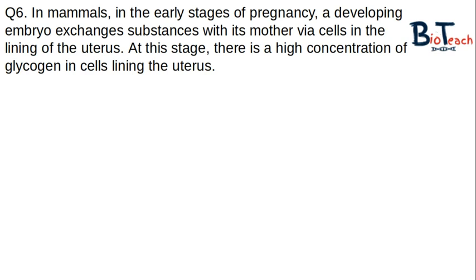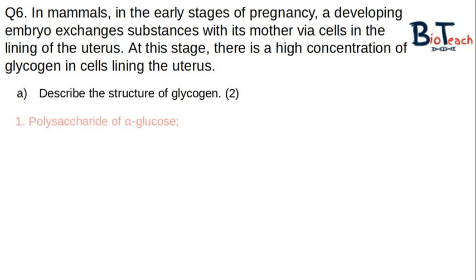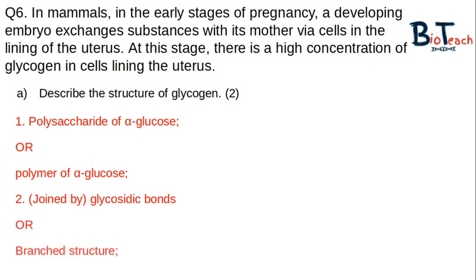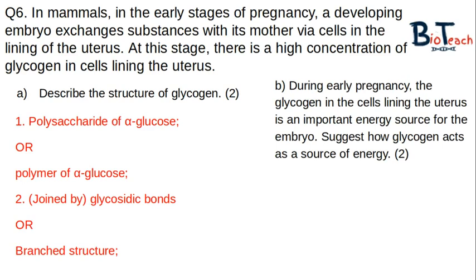The last question is on glycogen. There are a lot of questions on starch and cellulose, so this one will be really useful to know. The question gives a blurb about glycogen in mammals and the uterus during pregnancy. The first part asks us to describe the structure of glycogen: it's made up of alpha glucose held together by glycosidic bonds and it has a branched structure — two of these points give you the two marks. The second part asks us to suggest how glycogen acts as a source of energy. We know that energy is held in the form of glucose molecules, and when the bond is hydrolyzed, glucose is released.